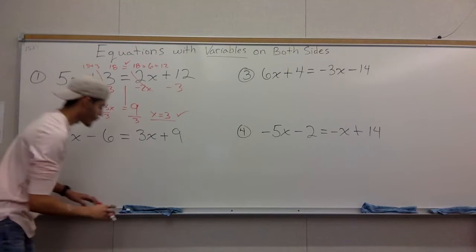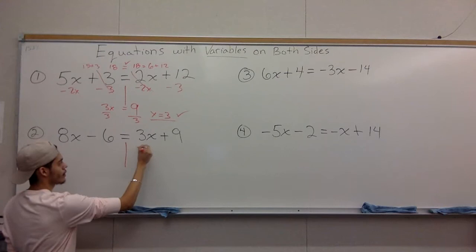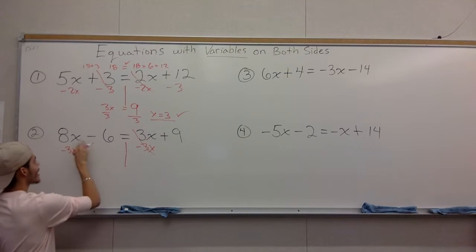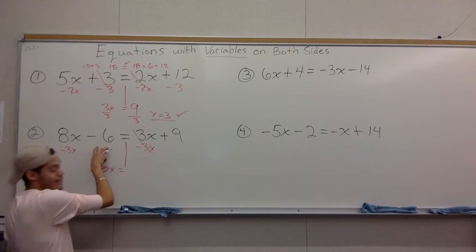All right, now for this next problem, same thing. Separate the problem, move the x to the left side, subtract 3x, cross it off, we don't need it. Subtract 3x to this side, 8x minus 3x, we have 5x here.